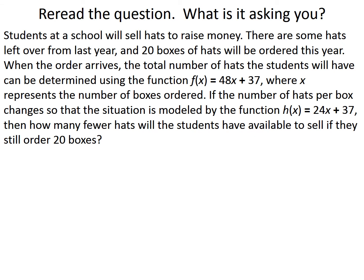Let's take a look at what the question is actually asking us. It's a great idea to underline your question when working through problems. The question is saying 'how many fewer' — I'm going to circle that word 'fewer' — will the students have available to sell if they still order 20 boxes. And the rest of the question is about the number of hats per box changing. I'm going to circle the word 'changes' because that lets me know something is changing from one situation to the next.